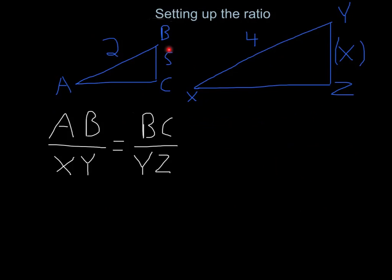Here we have AB over XY equals BC over YZ. If we plug in our data, we get 2 over 4 equals 5 over X. Now just cross multiply and divide, and voila, we get our answer, 10.